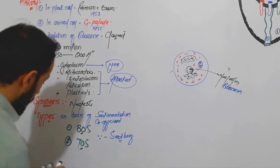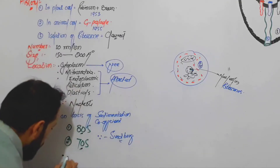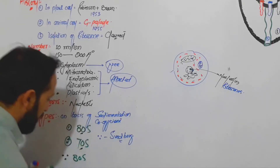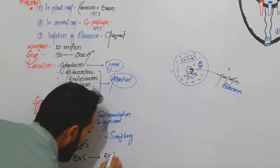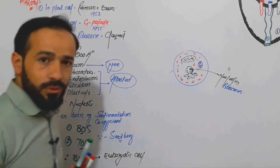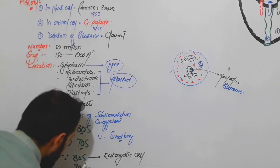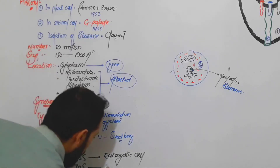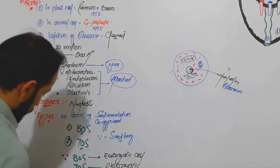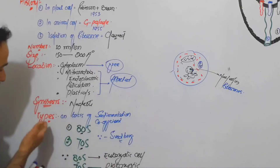The 80S ribosome is present in eukaryotic cells. So in our cell, the 80S ribosome is present. And the 70S ribosome is present in prokaryotic cells — meaning in a bacterial cell, the 70S ribosome is present. This is about the types of ribosome.